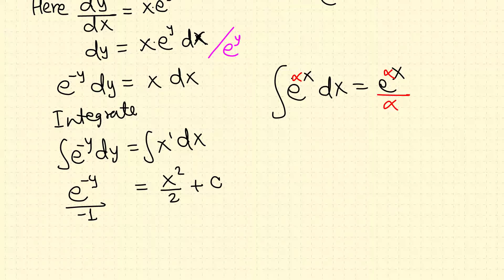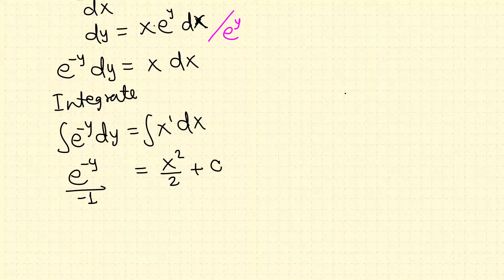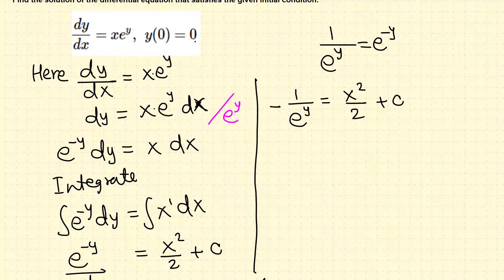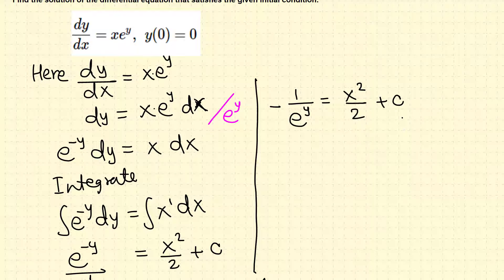Now let's solve for y and apply the initial condition to determine the constant. We have negative e to the negative y, which can also be written as negative 1 over e to the positive y, equals x squared over 2 plus c. We have two options: determine the constant first using the initial condition, or solve for y first. Let's find c first, since having a number may make solving for y easier.